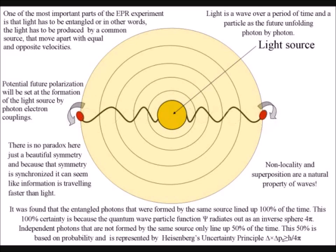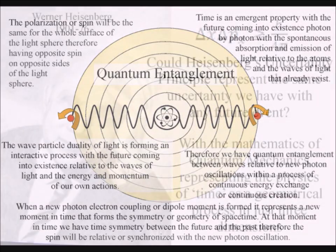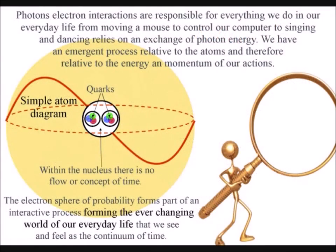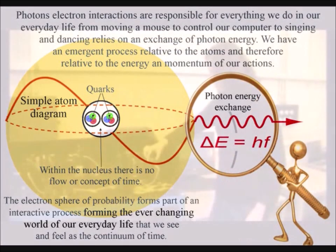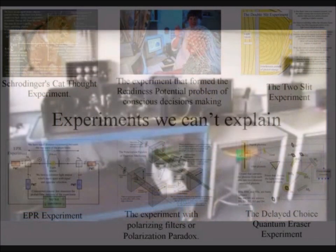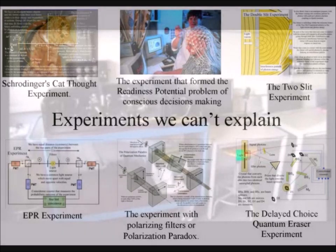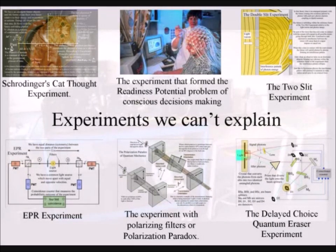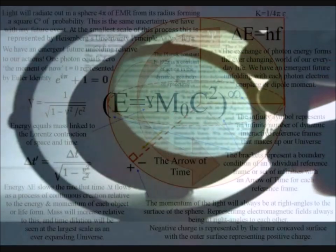This is a continuous process unfolding all around us with the spontaneous absorption and emission of light. It is because we are made of atoms that this process is relative to the energy and momentum of our actions — and therefore relative to how we set up and run experiments. I will place links below that explain how this emergent process can give us a logical understanding of the two-slit experiment, the delayed-choice quantum eraser experiment, the EPR experiment, and the polarization paradox with visible light and microwaves.